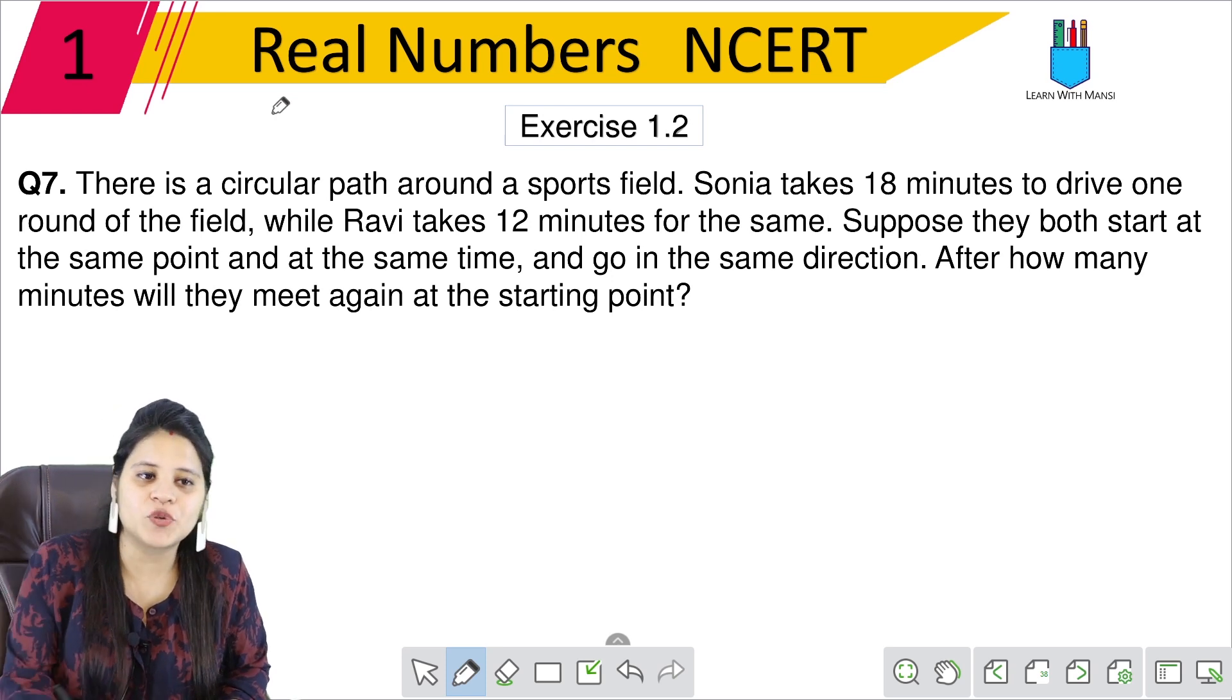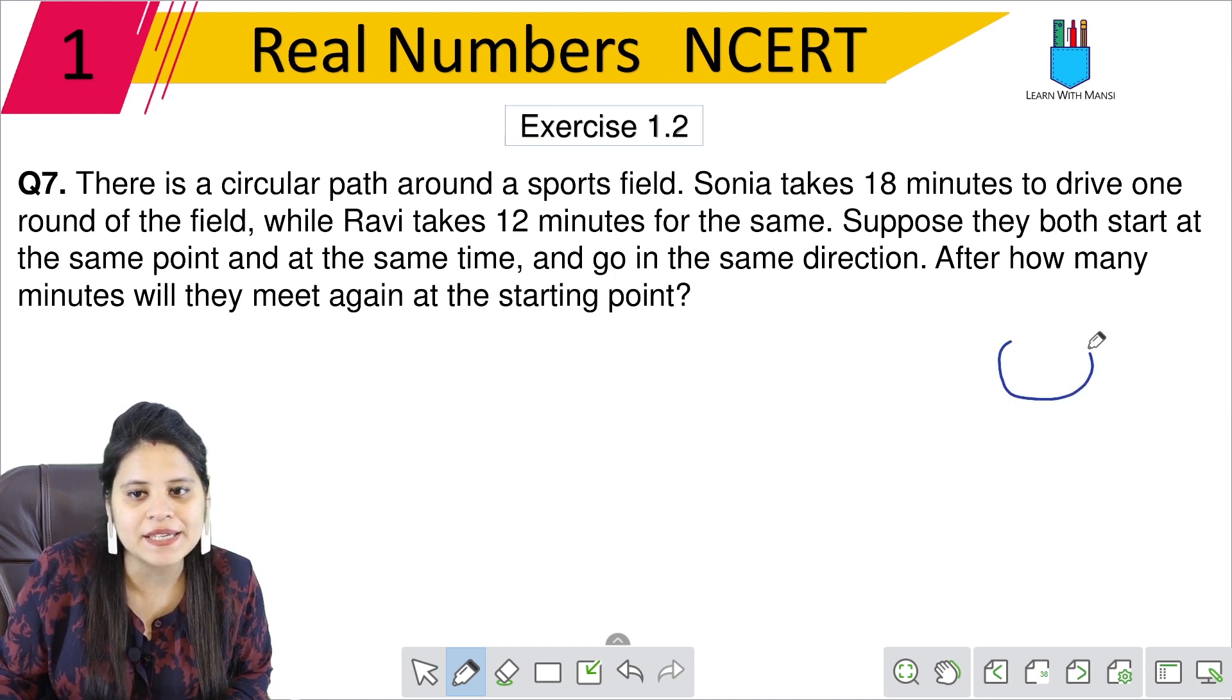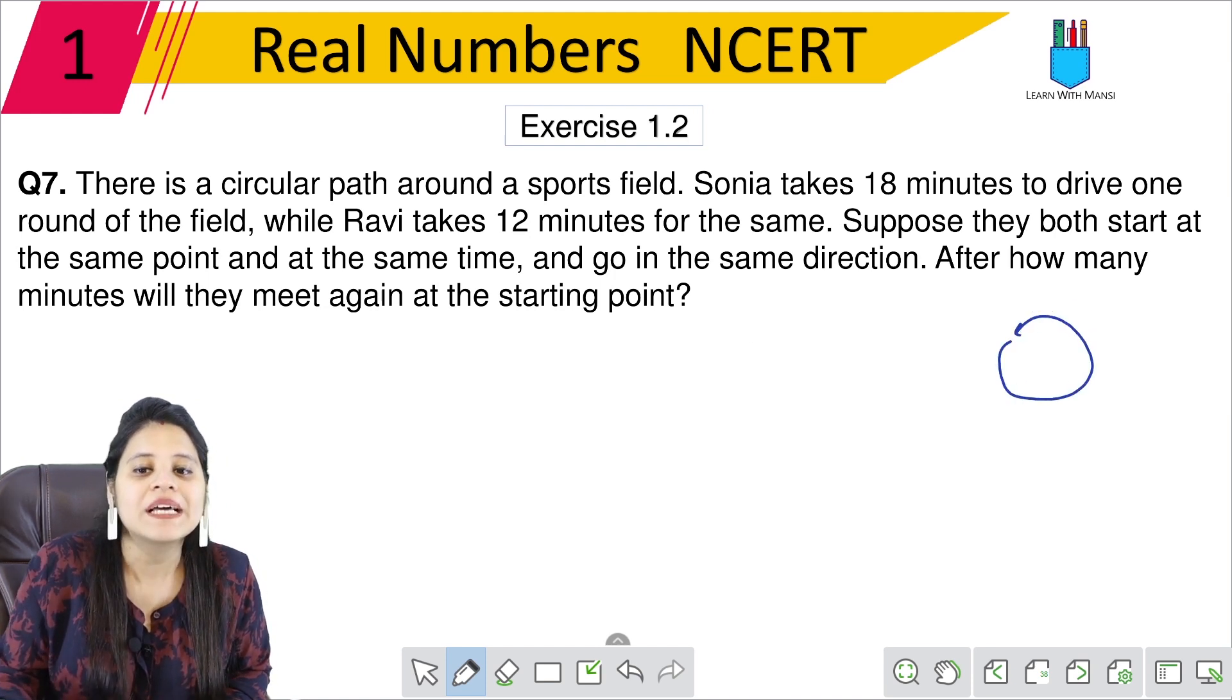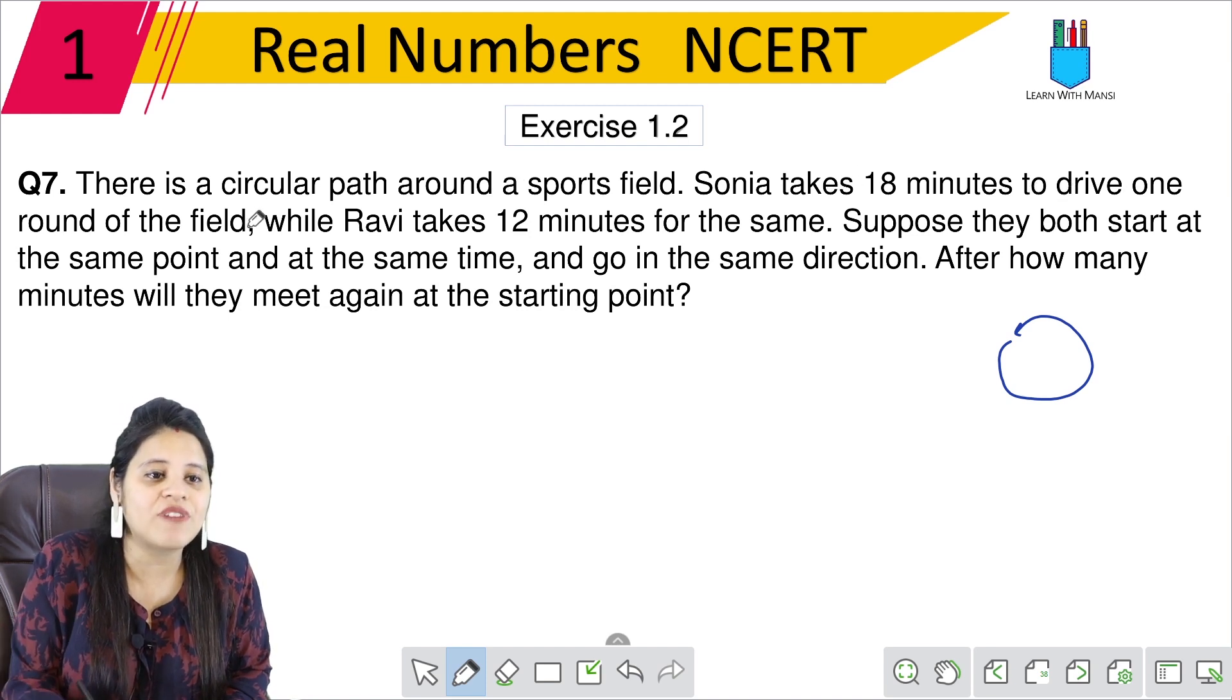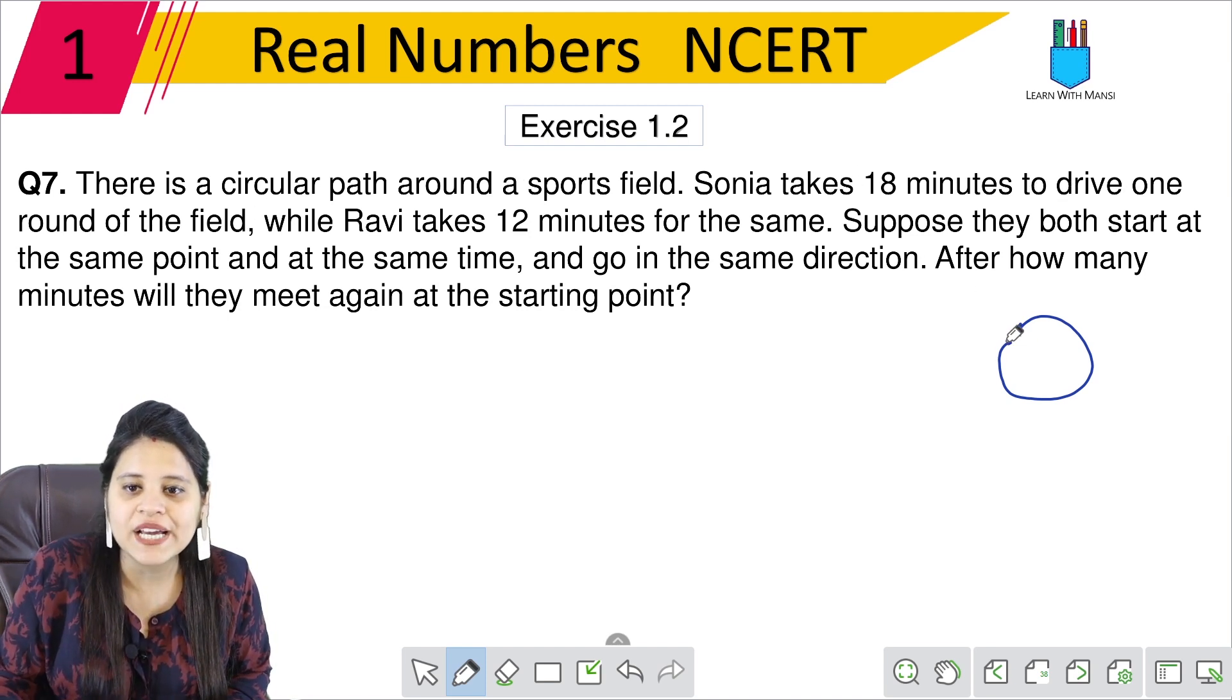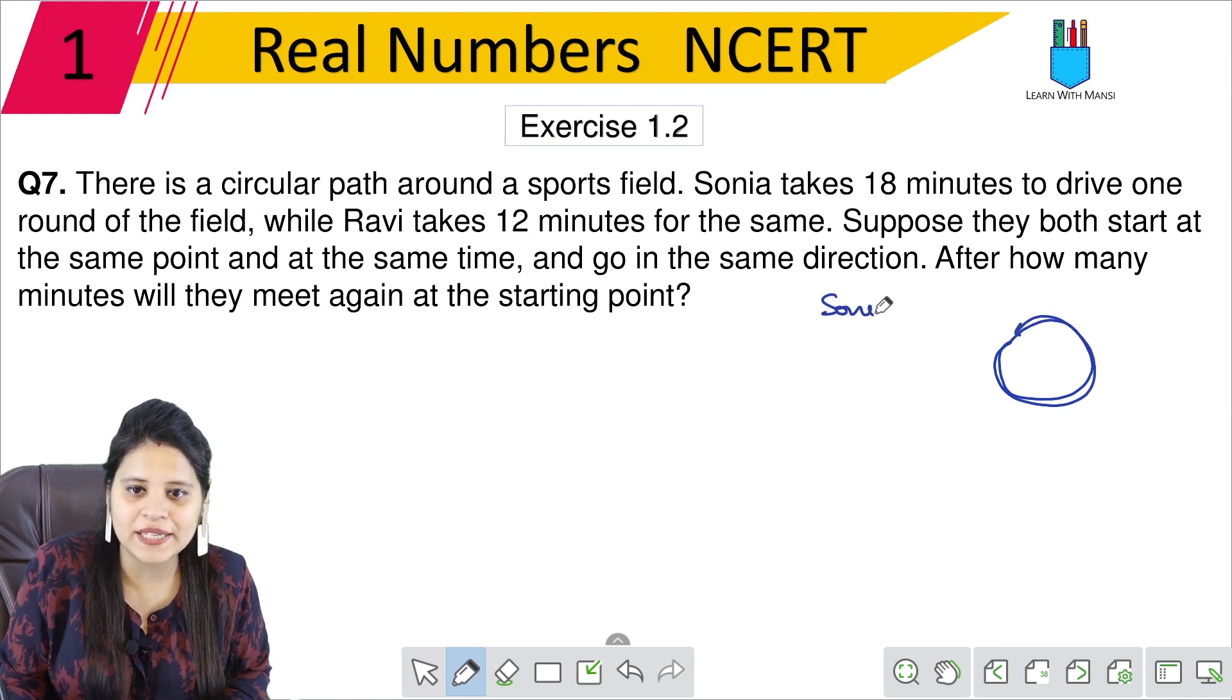So here, the question is: there is a circular path around a sports field. A circular path, this way will be a circular path. Now, Sonia takes 18 minutes to drive one round of the field. So Sonia takes 18 minutes to complete the whole round of the field. 18 minutes.